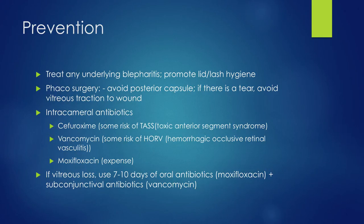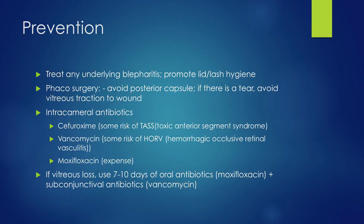The reason I don't use vancomycin is that there is a rare but devastating risk of something called hemorrhagic occlusive retinal vasculitis, HORV. Any time you have the word retina with occlusion or vasculitis, that's a bad thing — we don't want to go there. Moxifloxacin, which we get straight from the Vigamox bottle, can be divided into probably 15 injections from a 3cc bottle of Vigamox. It's a little bit more expensive but doesn't have any of those other potential side effects or complications.